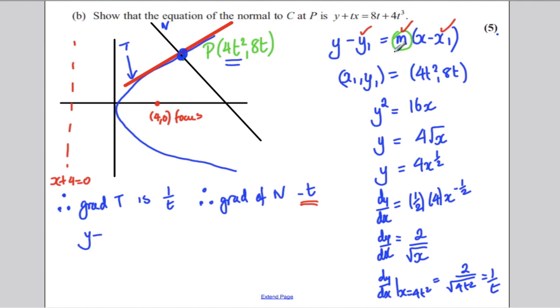So, y subtract y1, which is 8t, is equal to negative t times x subtract x1, which is x subtract 4t squared. So, okay, multiply this out. Y subtract 8t is negative tx plus 4t cubed. Add tx to both sides, add 8t, and you get y plus tx is equal to 8t plus 4t cubed. And you've got exactly what you were looking for, for 5 marks, and you're done.